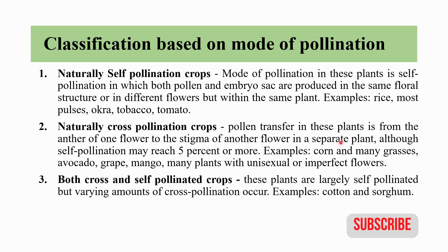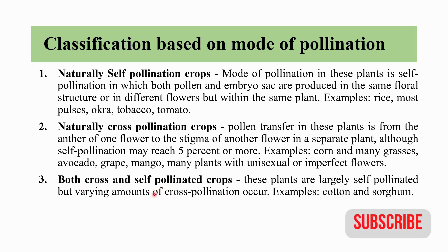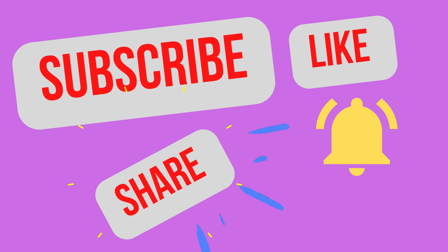If self-pollination exceeds more than five percent, it comes under cross-pollinated crops. Examples of cross-pollinated crops include corn, many grasses, avocado, grape, mango, and plants with unisexual or imperfect flowers. Both self- and cross-pollinated crops are largely self-pollinated but have various amounts of cross-pollination occurring; examples include cotton and sorghum. If you like this video, please like, share and subscribe to the channel.